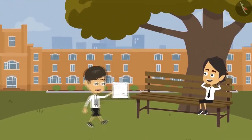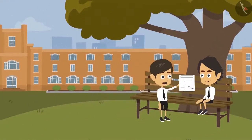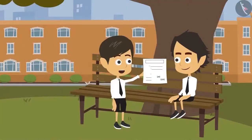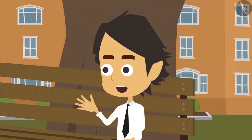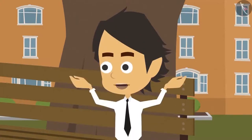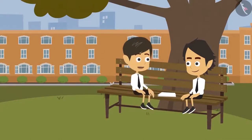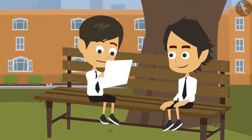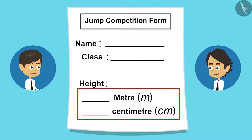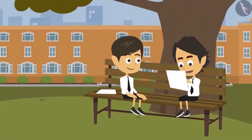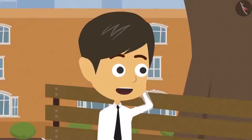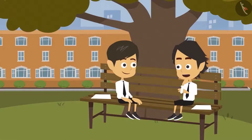Ayushman, the teacher has given this form. We have to write our height in this so that she can put us in the correct group. But what is the relation between our height and long jump? I don't know. It is possible that tall people can jump longer, so groups are made as per people's height. Ayushman, height is to be written in meters and centimeters in this. Yes, but I know my height only in centimeters. Me too. What do we do now? I think we can convert centimeters into meters.